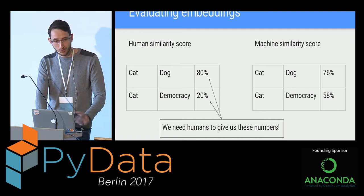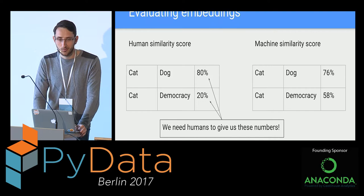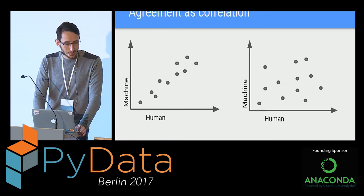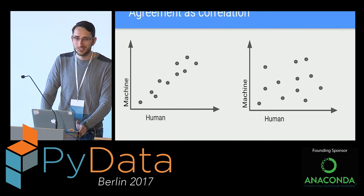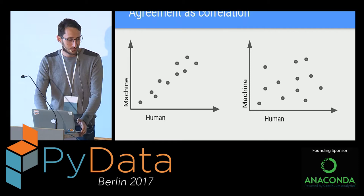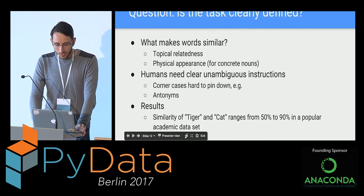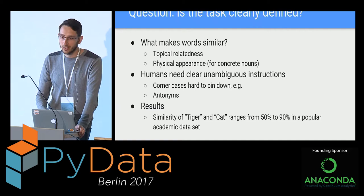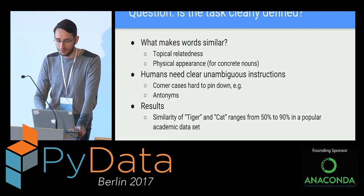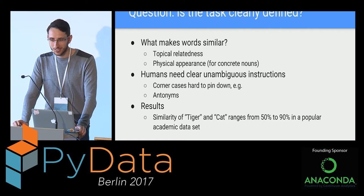We get humans to give us the numbers on the left, and then we get the machine to give us the numbers on the right. What I'm interested in is how do we get the humans to give us those numbers in such a way that they are actually reliable and useful for evaluation. If you scatter the scores between humans and machine and get a nice tight fit, you've got a pretty good model. If you just get a point cloud with no shape, you know you're not doing very well.